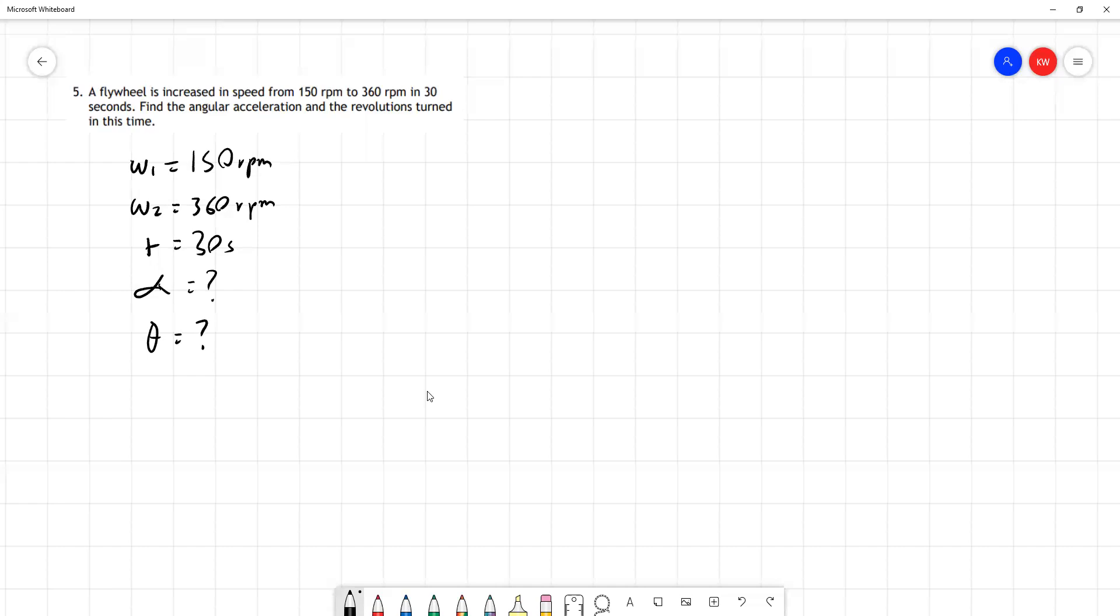First things first, we've got a couple of quantities here in units which are not our standard units for calculation. Our velocities have been given in rpm. If you remember from the course notes, to convert from rpm into radians per second we've got this formula: 2 pi n where n is our velocity in rpm, divided by 60.